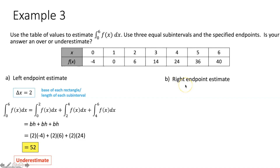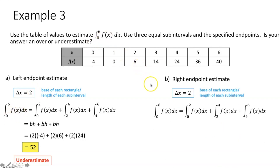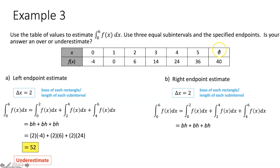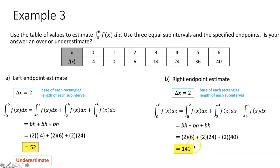For the right endpoint estimate, everything is the same except we use the y value corresponding to the right endpoint of each interval. Our first interval zero to two uses a height of six; two to four uses a height of twenty-four; four to six uses a height of forty. Each rectangle has a base of two. Summing: two times six plus two times twenty-four plus two times forty equals one hundred forty. Since the function is increasing and we're using a right endpoint estimate, this is an overestimate.